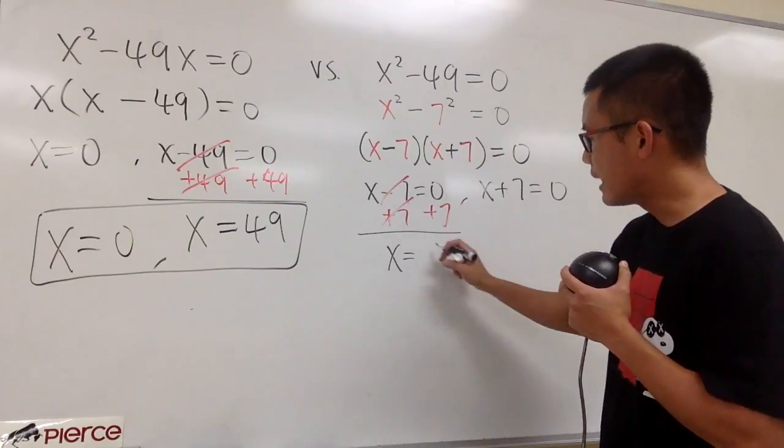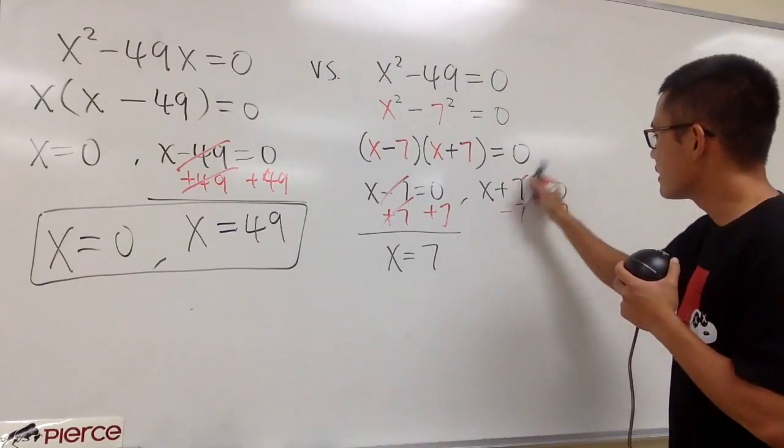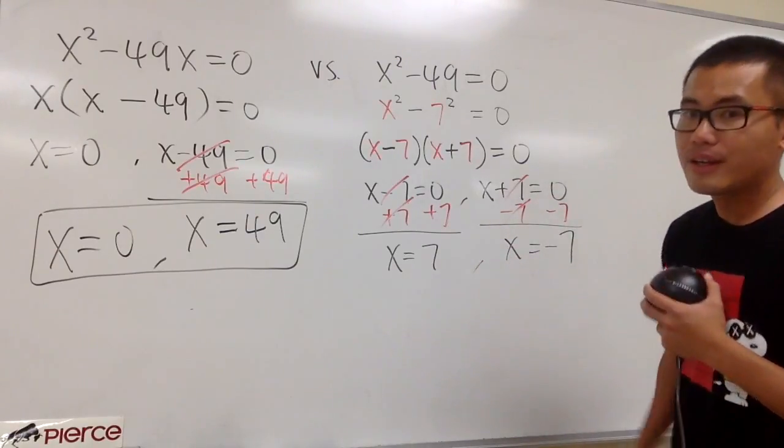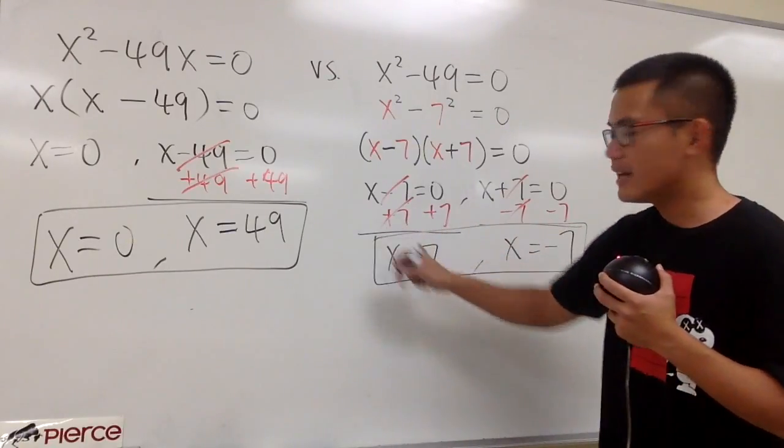x is equal to positive 7. This one, minus 7, minus 7. Cancel this out. And we can get x is equal to negative 7. Here we have these two answers. 7 or negative 7.